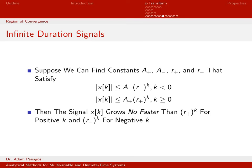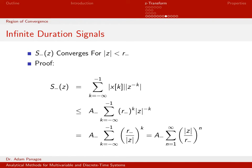If we can find A plus, A minus, R plus, and R minus satisfying these conditions, then S minus of Z converges for all Z whose magnitude is less than R minus, and S plus converges for all Z whose magnitude is greater than R plus. We can actually prove this now — this part is pretty easy.